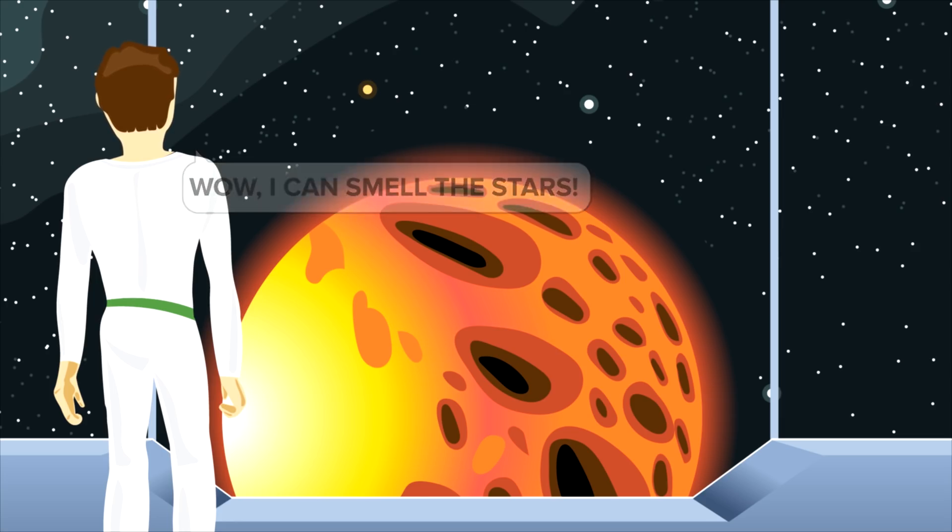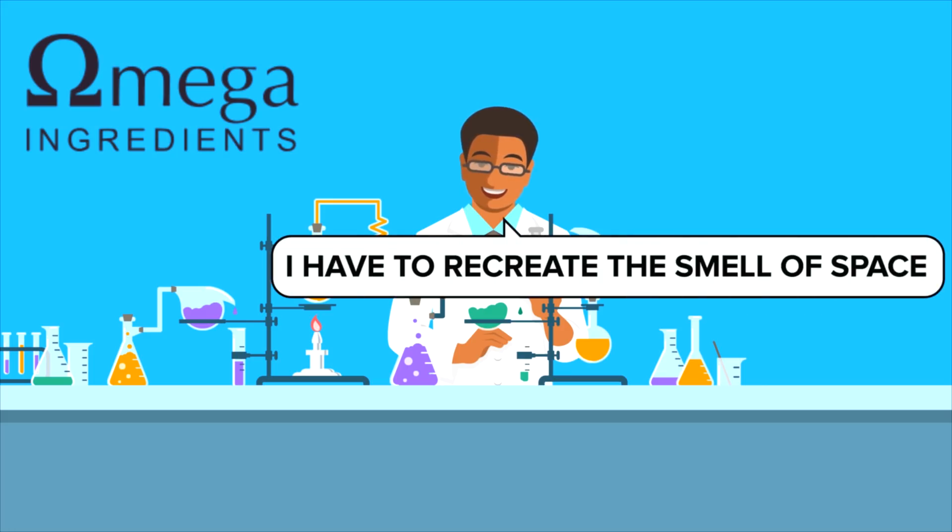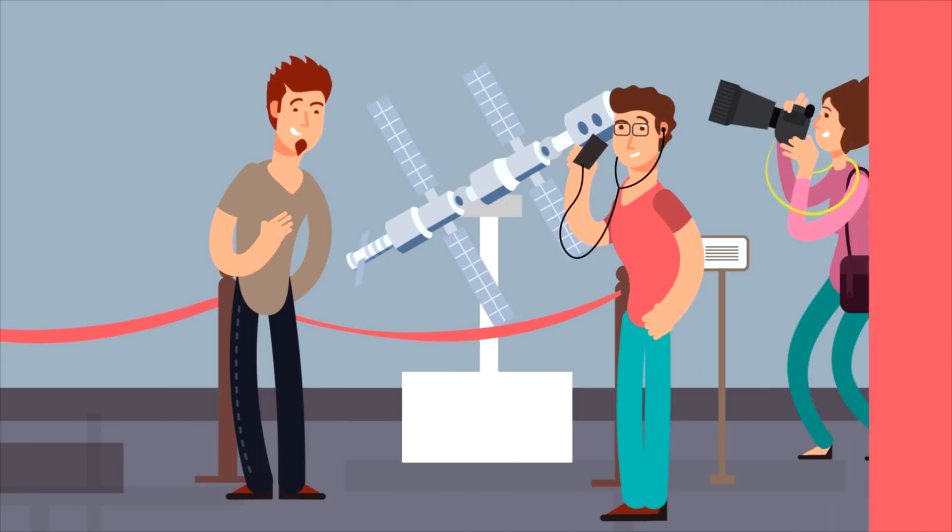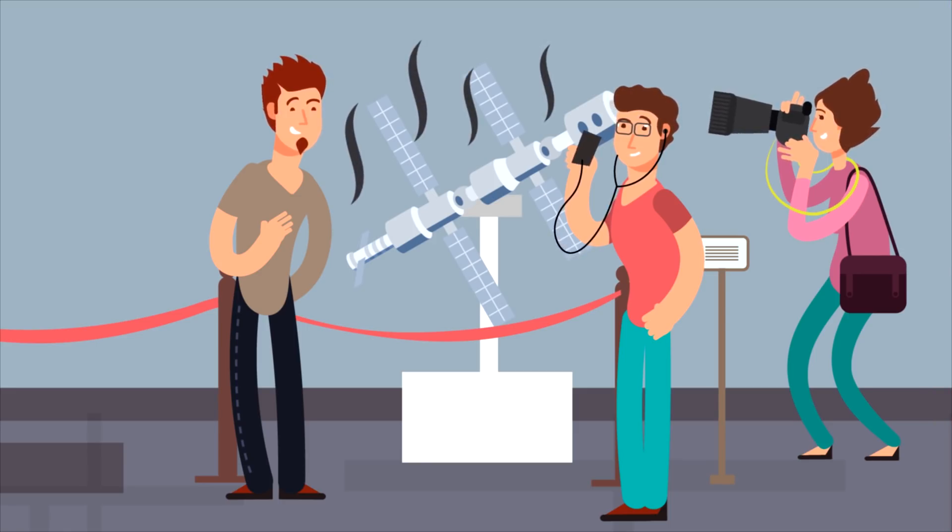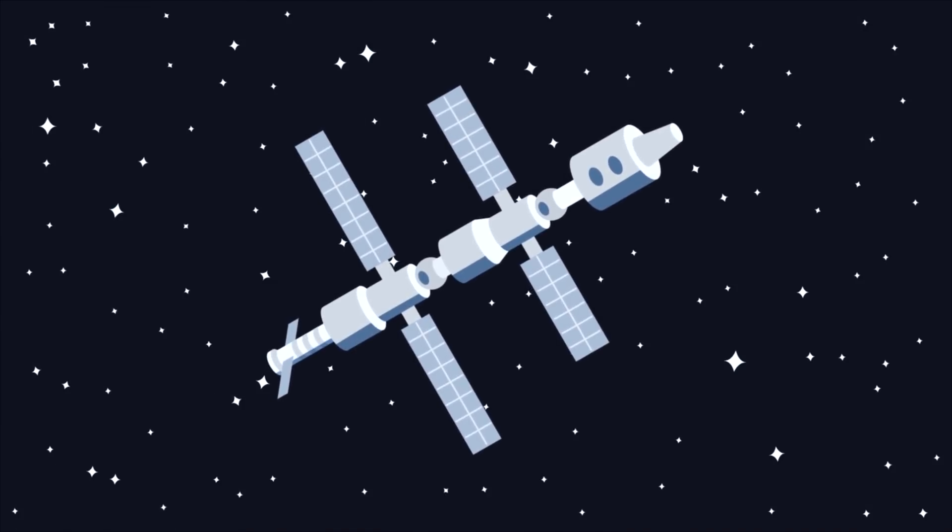In 2008, the Daily Telegraph reported that NASA commissioned Steven Pierce, a chemist and managing director of fragrance manufacturing company Omega Ingredients, to recreate the smell of space in a laboratory. Pierce came to NASA's attention after he recreated the smell of the Soviet Mir space station as part of an art installation on impossible smells. The Mir burnt up in the atmosphere in 2001.